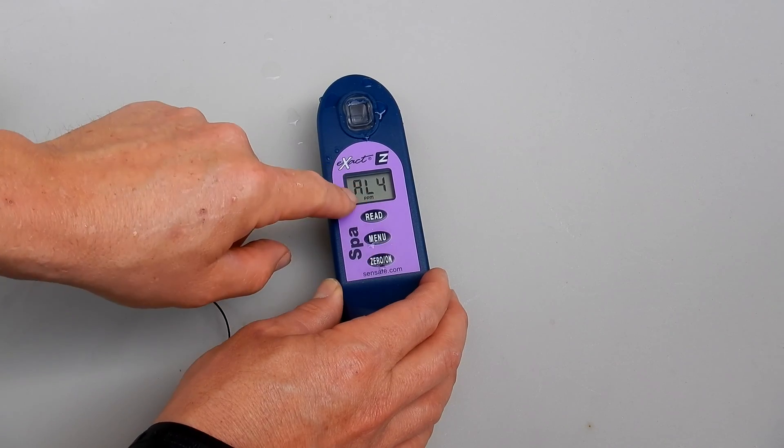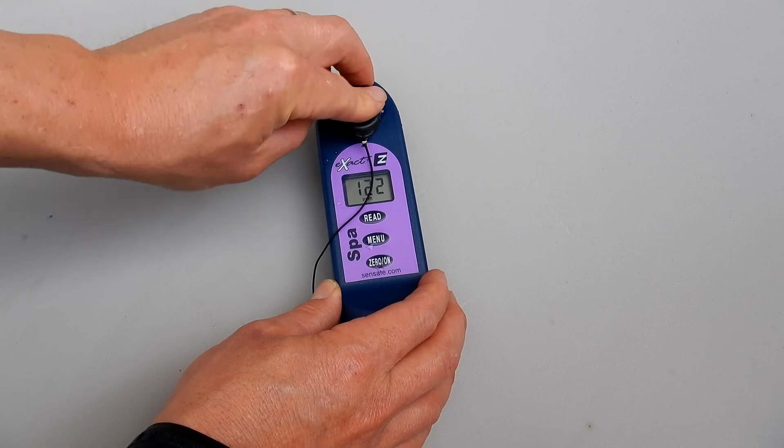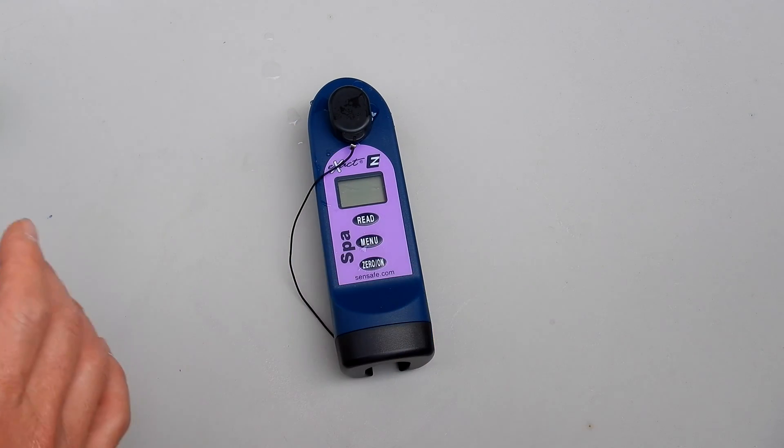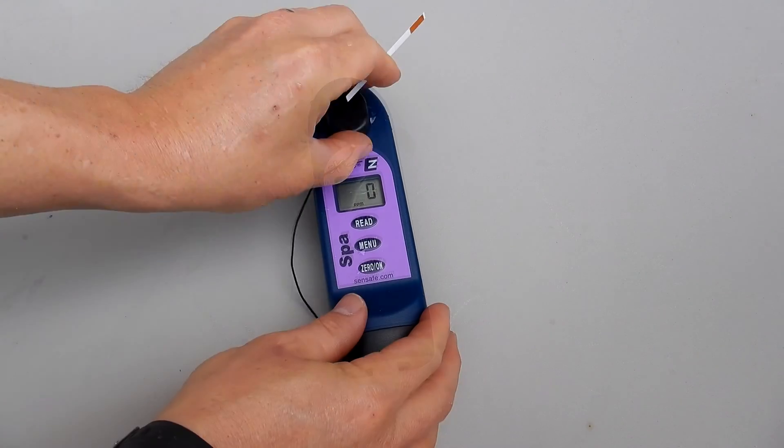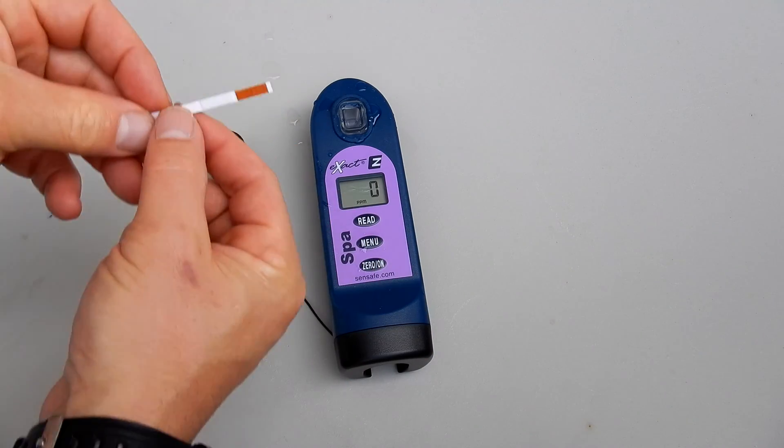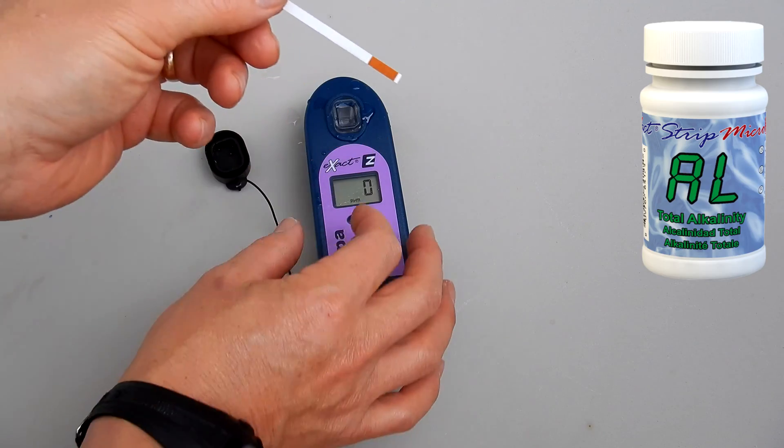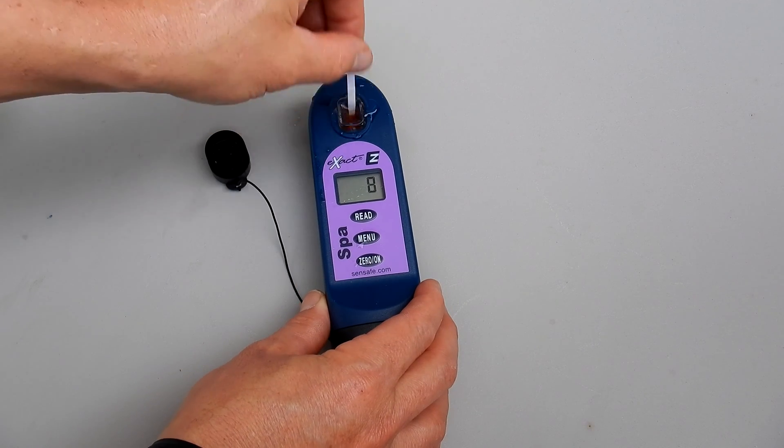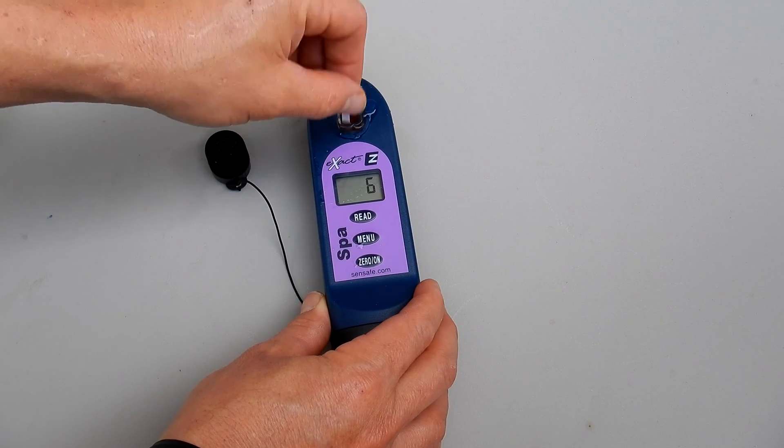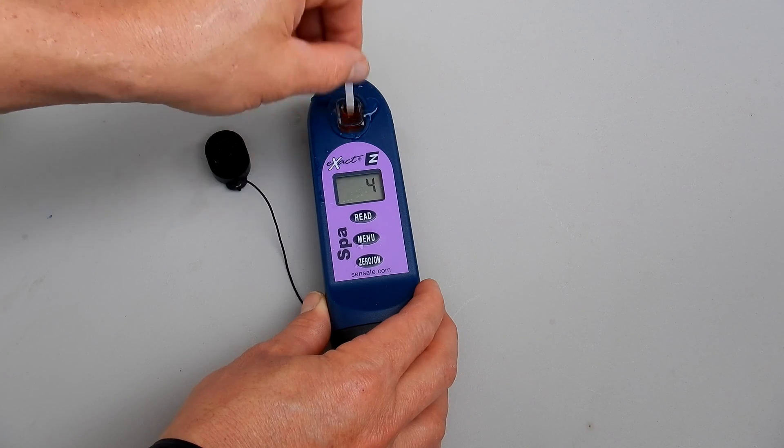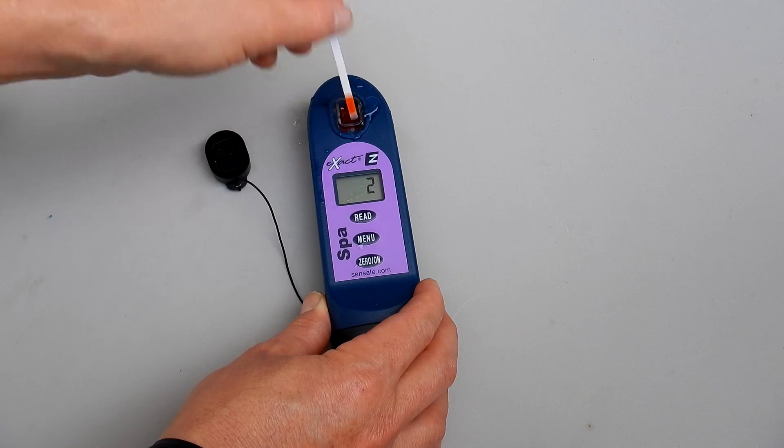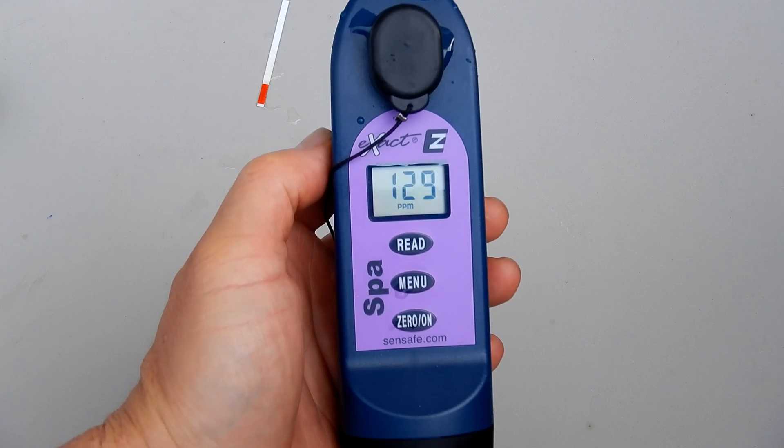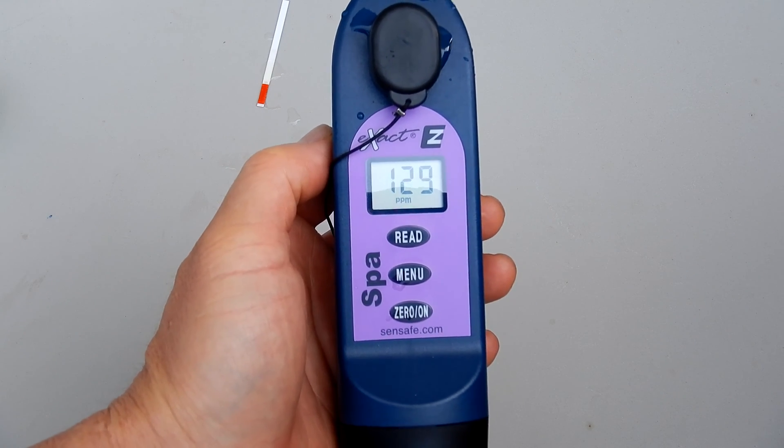Now you want to scroll over to the test. I'm going to go ahead and do the alkalinity. So AL4. I'll put the cap on and I'll zero out the unit. Now I'm going to take the Exact Strip Micros, go ahead and hit read. You want to move the strip back and forth as it's counting down. When it gets to one you want to put the cap on. The alkalinity here is 129 parts per million.